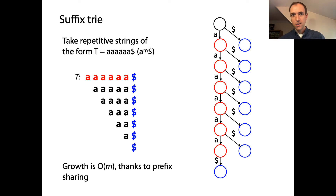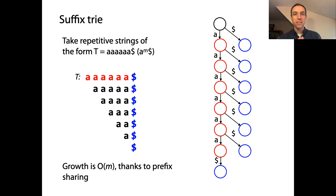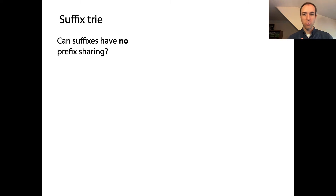Now, we know that real strings don't look like this — they don't have maximal prefix sharing. They might even have kinds of strings that have no prefix sharing at all. Absolutely no sharing of prefixes between suffixes. So what would be a type of string that has no prefix sharing?